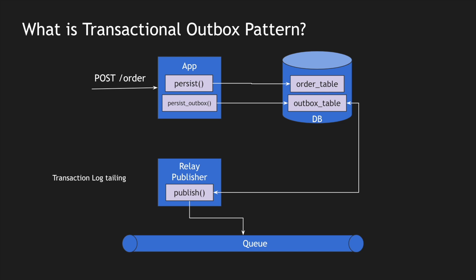There are different patterns for these publishers. For example, you can look at transaction logs in the database to detect new record additions, or you can use a polling publisher pattern that polls every minute or at a configured interval. These are different ways to look up the table, find new records, publish those messages, and then mark them as processed so you don't replay the message again.